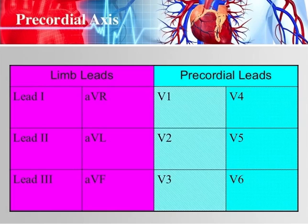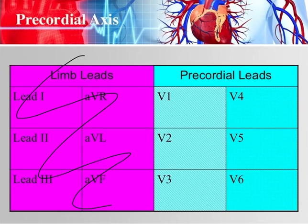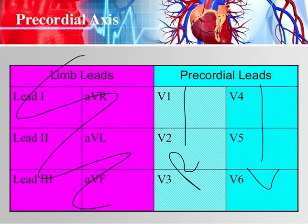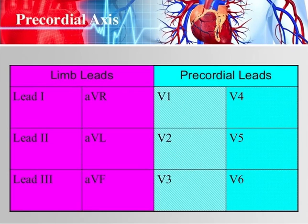We've already done all the frontal plane stuff. For the precordial axis, you separate your leads — you have six precordial leads or V leads, and that's how we get a 12-lead EKG. On the right side you have your right ventricular or right precordial leads, and on the left side you have your left-sided precordial leads. From right to left, you should go from a mostly negative QRS complex to a mostly positive QRS complex.